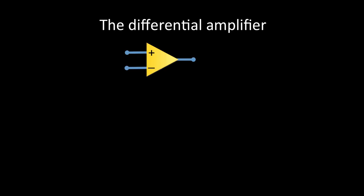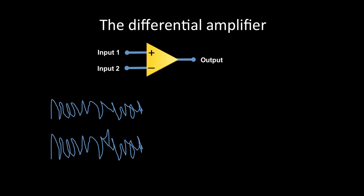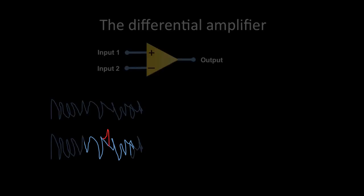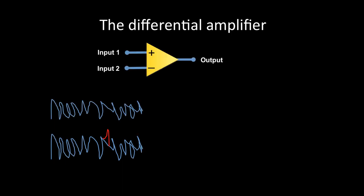EEG is recorded using the technology of the differential amplifier. The differential amplifier takes two electrical inputs and displays the output as the difference between the two inputs. This is particularly useful for recording and displaying very small electrical signals, such as those in EEG. For example, you can see two waveforms which are very similar, except for one small difference shown in red. When these two signals are placed through a differential amplifier, the output is simply the difference between them and all other commonalities are cancelled out.